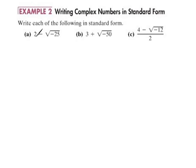Looking at part (a) here we have 2 minus the square root of negative 25. This is the problem that we need to simplify before we can do anything else.